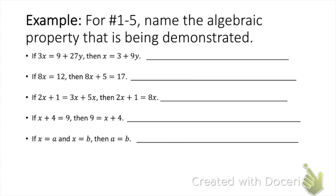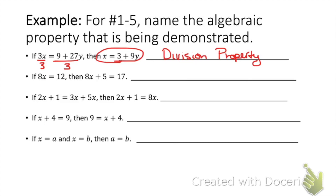Now let's practice using these algebraic properties. In these first five examples, we want to identify which property is being used. The first one: if 3x equals 9 plus 27y, then x equals 3 plus 9y. All we did was divide everything by 3, so this is the division property — we did it to both sides of the equation. The second one: if 8x equals 12, then 8x plus 5 equals 17. We added 5 to both sides, so 12 plus 5 is 17 — this is the addition property.